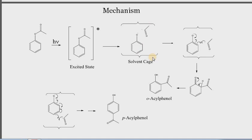The solvent keeps both these free radicals close to each other. This situation, where two free radicals produced during a particular step are kept in proximity, is known as the solvent cage. Due to this solvent cage, the acyl free radical will attack only this particular phenoxy free radical, either at the ortho or para position.